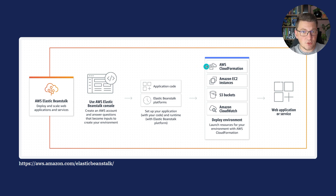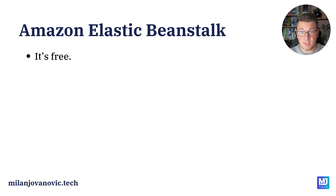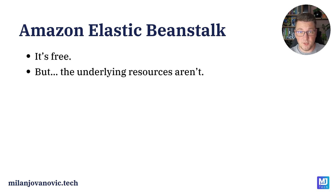This could be a CloudFormation infrastructure-as-code setup, an EC2 instance to run your application, an S3 bucket for object storage, CloudWatch for logging, a database to store your application's data, and so on. As for cost, Elastic Beanstalk itself is completely free to use. But the underlying resources are not free — you're paying for the underlying compute, which could be an EC2 instance, the virtual private cloud, CloudWatch for logging, or a database for storing your application's data.